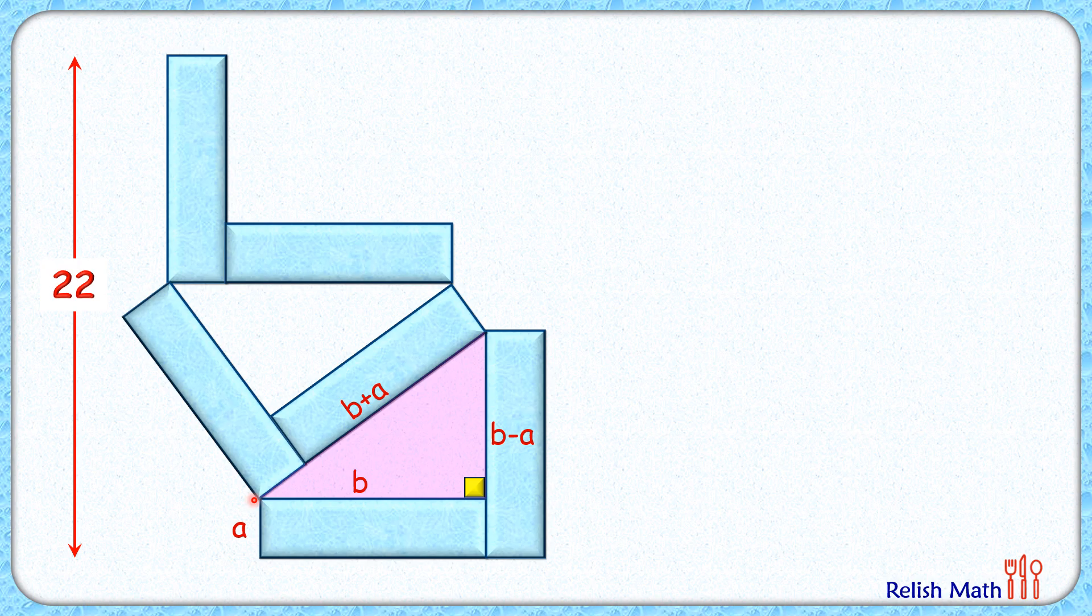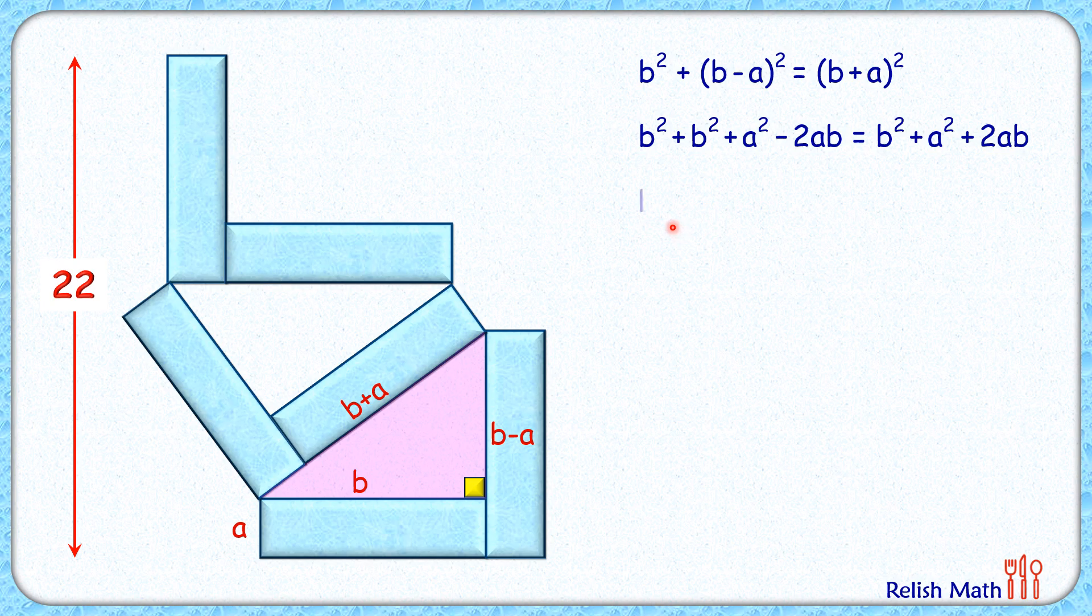Now applying Pythagorean theorem in this we'll get b² plus (b - a)² equals (b + a)². Opening the brackets on both sides and simplifying, we'll get b² equals 4ab, or b, this length of the rectangle, is 4 times a. So we can replace this b with 4 times a.